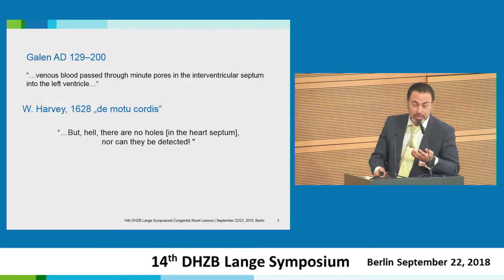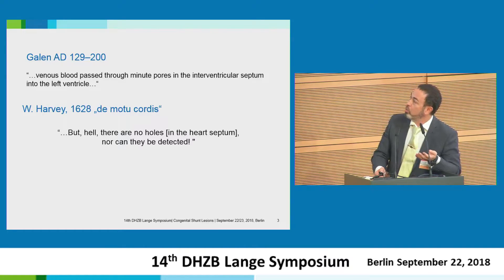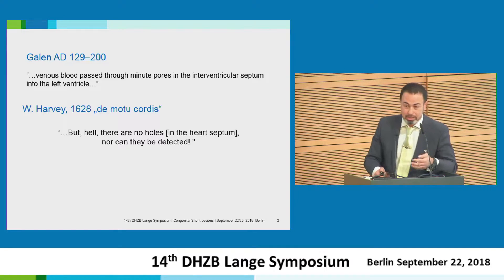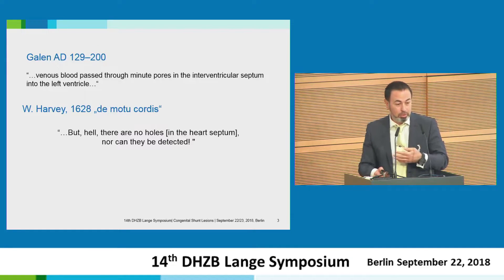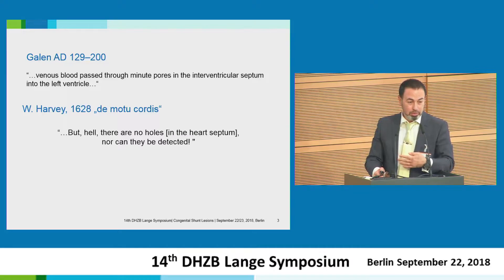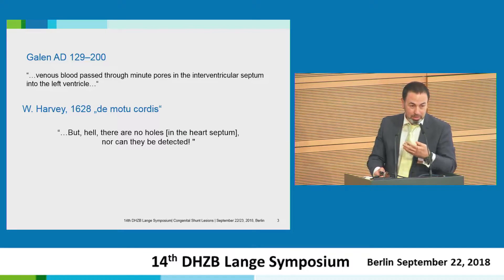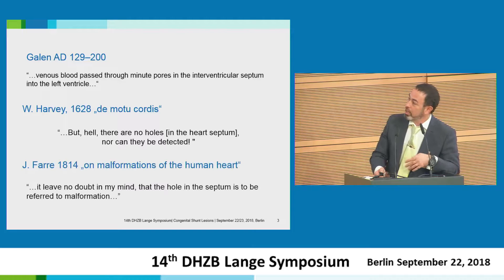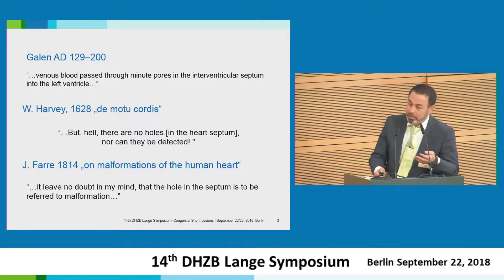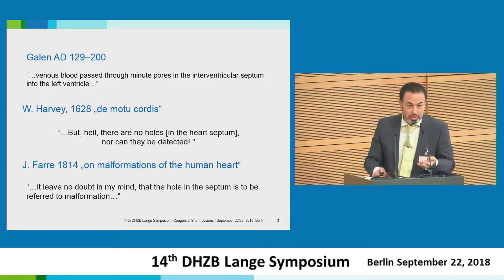Then Harvey, one and a half thousand years later, said: by the hell, there are no holes in the septum, nor can they be detected. Of course, in controversy to Galen, who tried to explain the circulation with this sentence — but there are no holes.